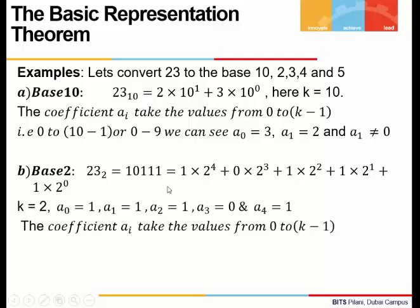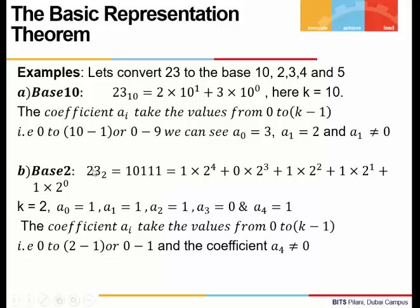If we write 23 to base 2, when we divide 23 repeatedly by 2, we will get this representation: 10111. Here coefficients a_0, a_1, a_2, a_3, a_4 can only take either the value 0 or 1, because coefficients take values from 0 to k minus 1. The coefficient of the largest power of the base is not 0, because if it becomes 0, then when we add the right-hand side, it will not give us our original number.